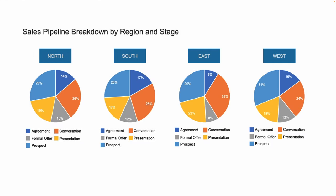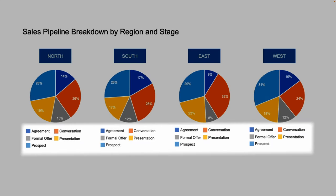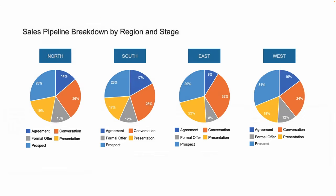The data is broken into five categories which relate to the progression of any given opportunity: prospect, conversion, presentation, agreement, and formal offer. The pipeline composition is expected to have minor variations between regions, but the proportion of opportunities at each stage should be consistent overall. Any notable discrepancies should be flagged to management immediately.